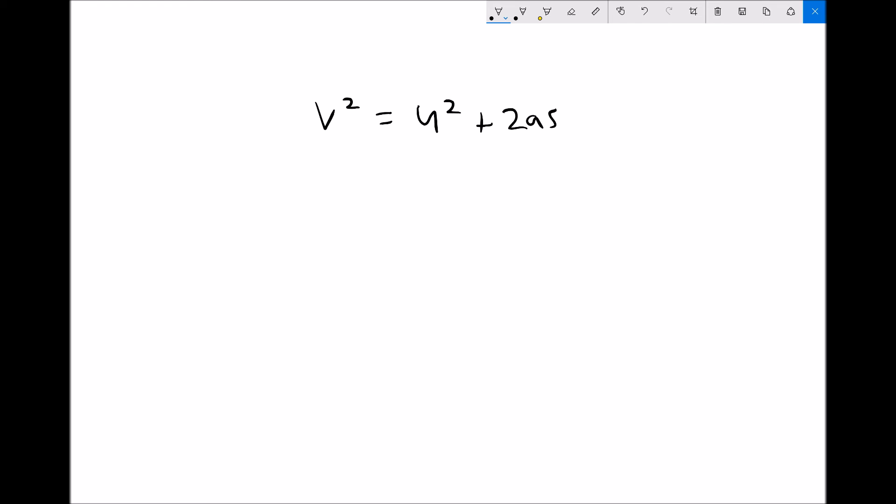u is the initial velocity. 2 is just a constant. a is the acceleration. And s is the displacement, or the distance travelled.